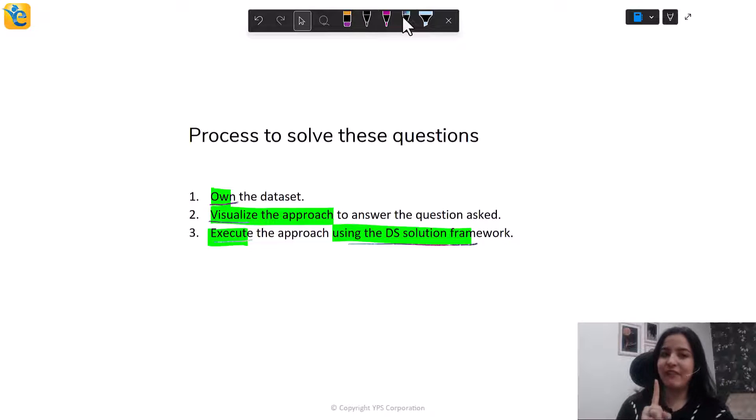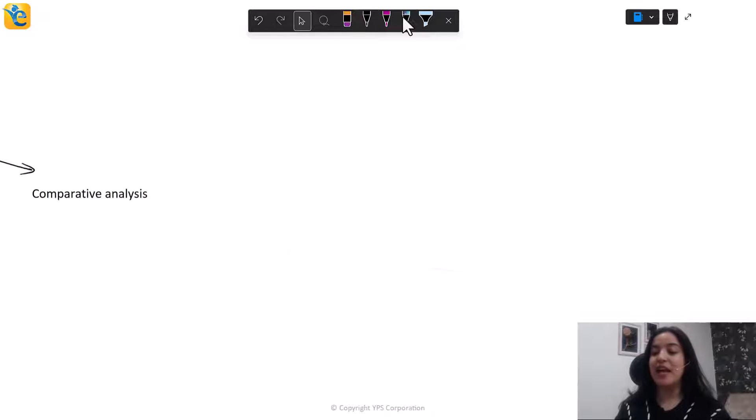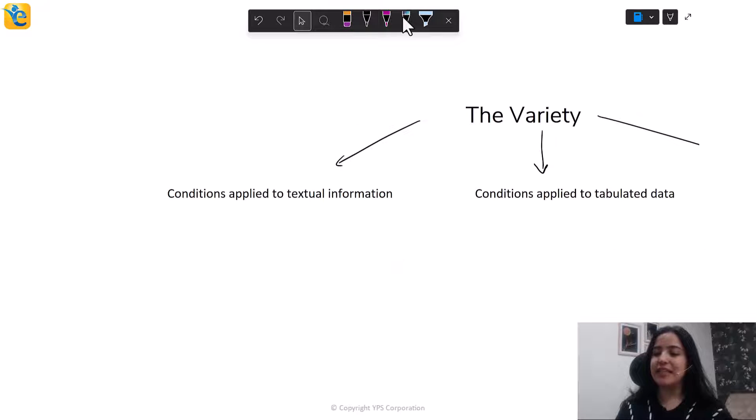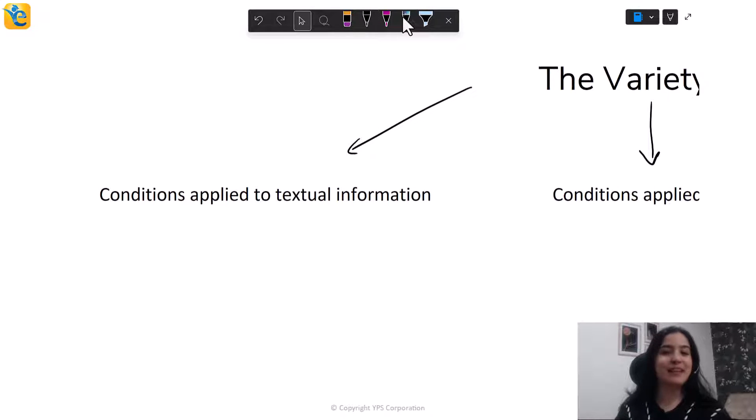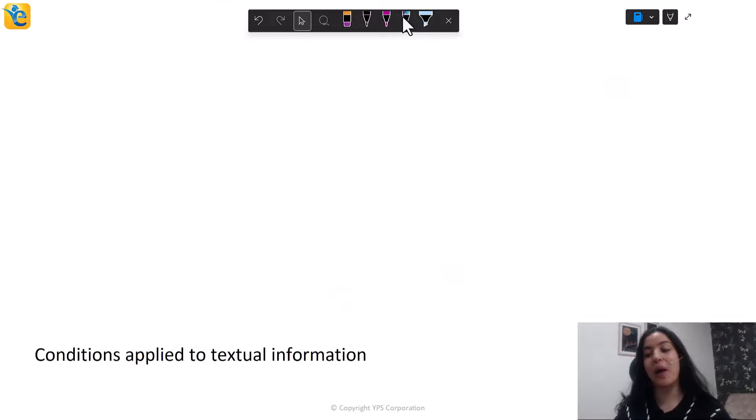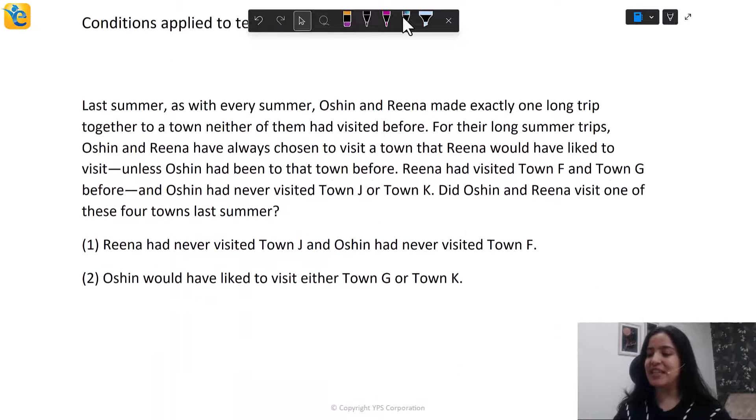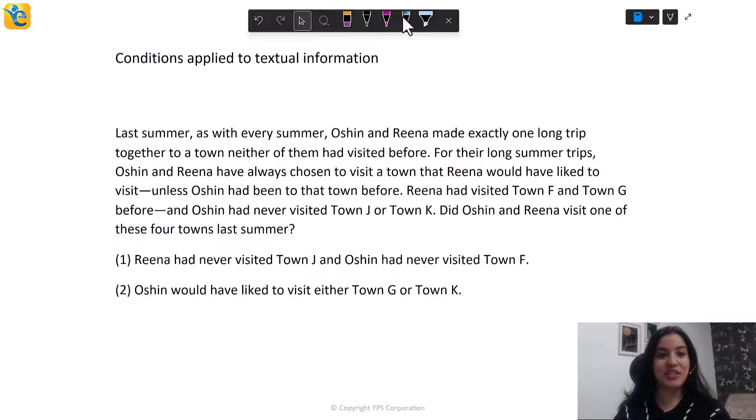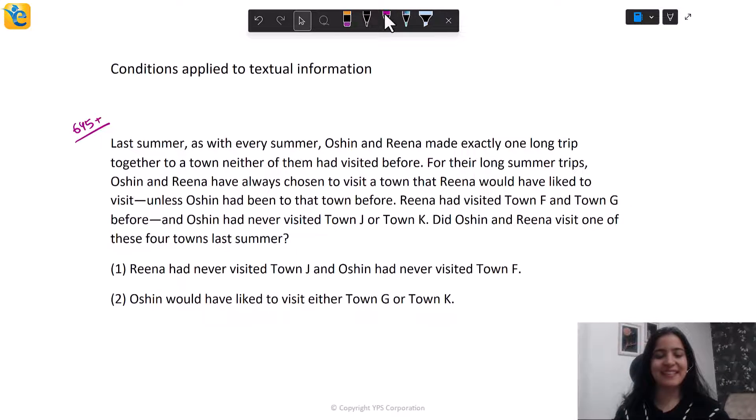We will see this process in action for each variety of questions one by one. But in this video, we will take up only one variety. Then in the next set of videos, we will take up the other two as well. So in this one, I'm going to take this first type: conditions applied to textual information. And how are we going to do this? Let's just see this official question. This is a difficult question, 645 plus level. Just give this a shot before we start discussing.